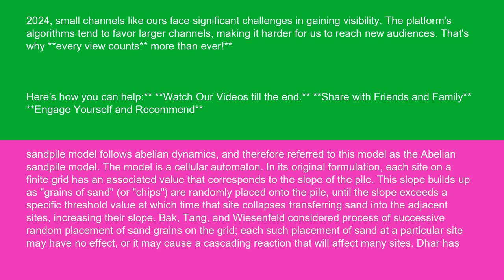The model is a cellular automaton. In its original formulation, each site on a finite grid has an associated value that corresponds to the slope of the pile. This slope builds up as grains of sand, or chips, are randomly placed onto the pile until the slope exceeds a specific threshold value, at which time that site collapses, transferring sand into the adjacent sites, increasing their slope. Bak, Tang, and Wiesenfeld considered the process of successive random placement of sand grains on the grid. Each such placement of sand at a particular site may have no effect, or it may cause a cascading reaction that will affect many sites.